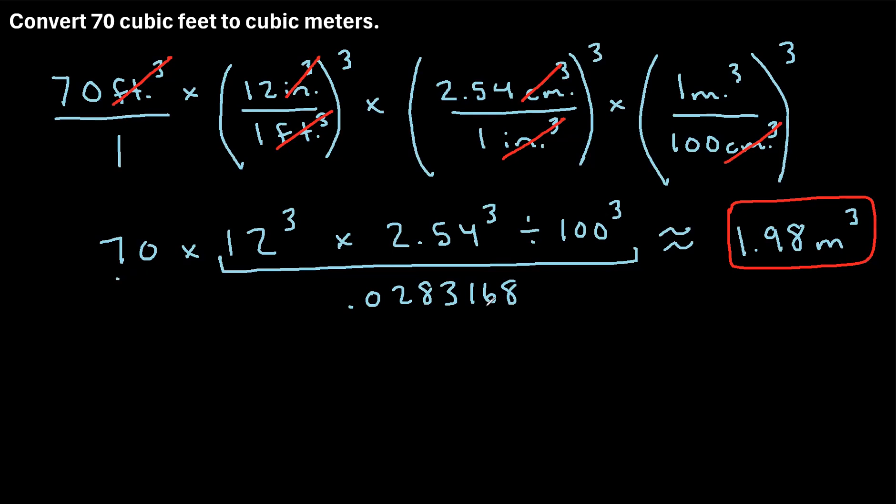So if you have cubic feet, a certain number of cubic feet, you're just multiplying it by this number to get your cubic meters. Or another way to say that is you could divide by the reciprocal of this number. Now the reciprocal of this would just be 1 divided by 0.0283168. And that turns out to be roughly 35.315.